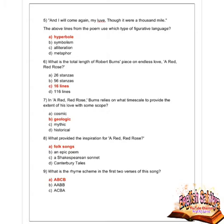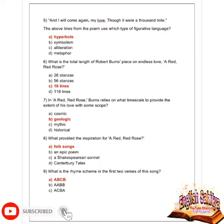Next question: what is the total length of Robert Burns' A Red Red Rose? Options are 26 stanzas, 56 stanzas, 16 lines, and 116 lines. Option C is correct — 16 lines. Next question: in A Red Red Rose, Robert Burns relies on what time scales to provide the extent of his love? Options are cosmic, geologic, mythic, and historical. Option B is correct — geologic.